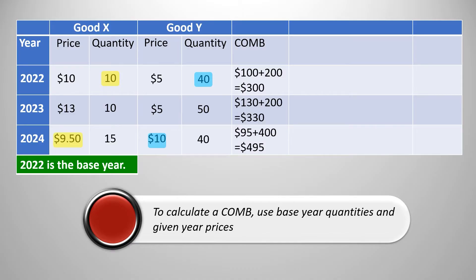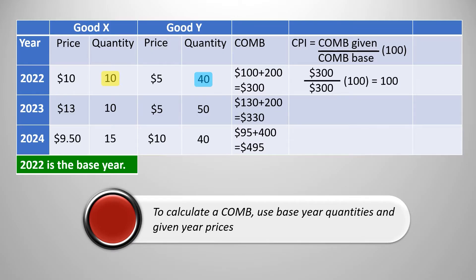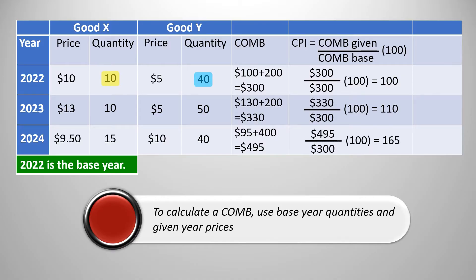Now that we have the market basket costs for each year, we need to convert this to a CPI. To find the CPI, take the cost of the market basket in the given year, divided by the cost of the market basket in the base year, and then multiply that times 100. Since 2022 is the base year, we get $300 divided by $300 times 100 equals 100. The CPI in the base year will always equal 100. For 2023: $330 divided by $300 equals 1.1 times 100 equals 110. Notice there's no symbol for CPI — no dollar sign, no percentage, just the number. The CPI shows us at a quick glance that the price level is higher in 2023 than in 2022. And for 2024 we get a CPI of 165.